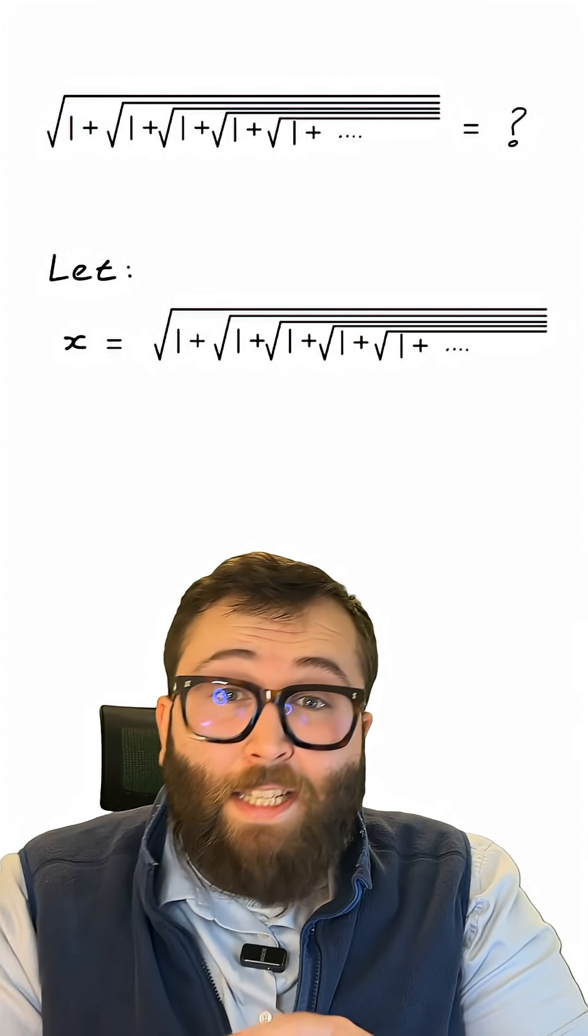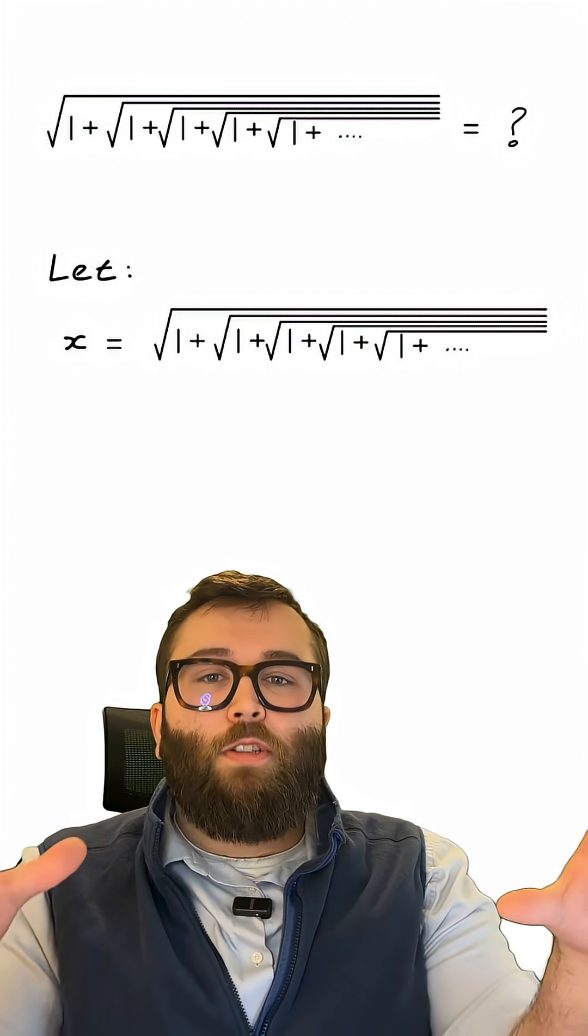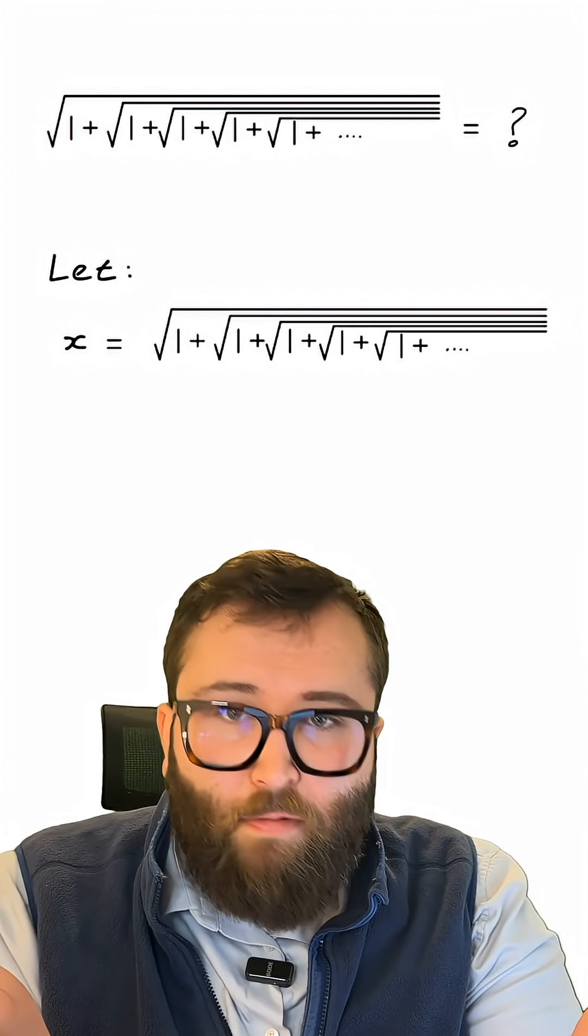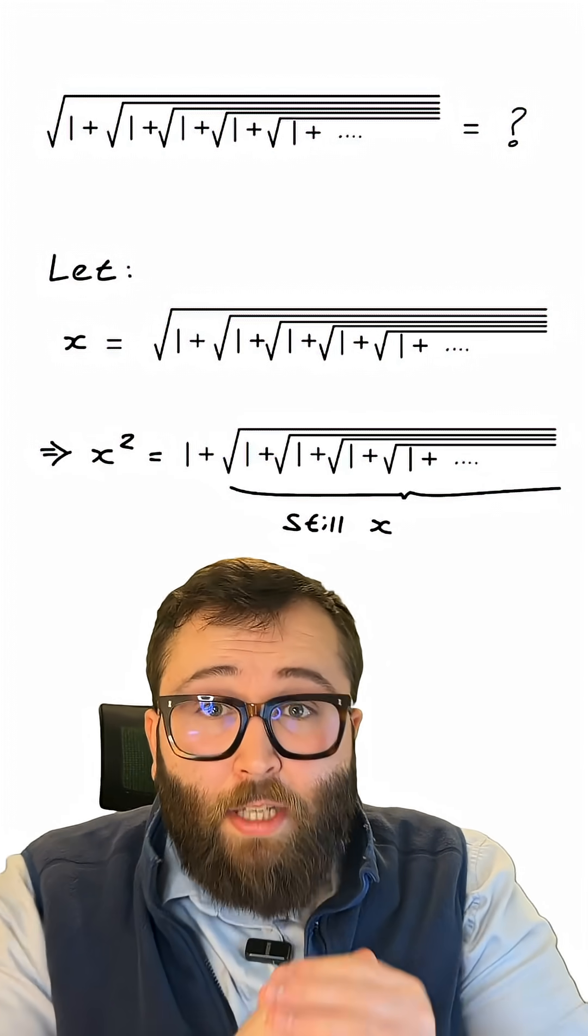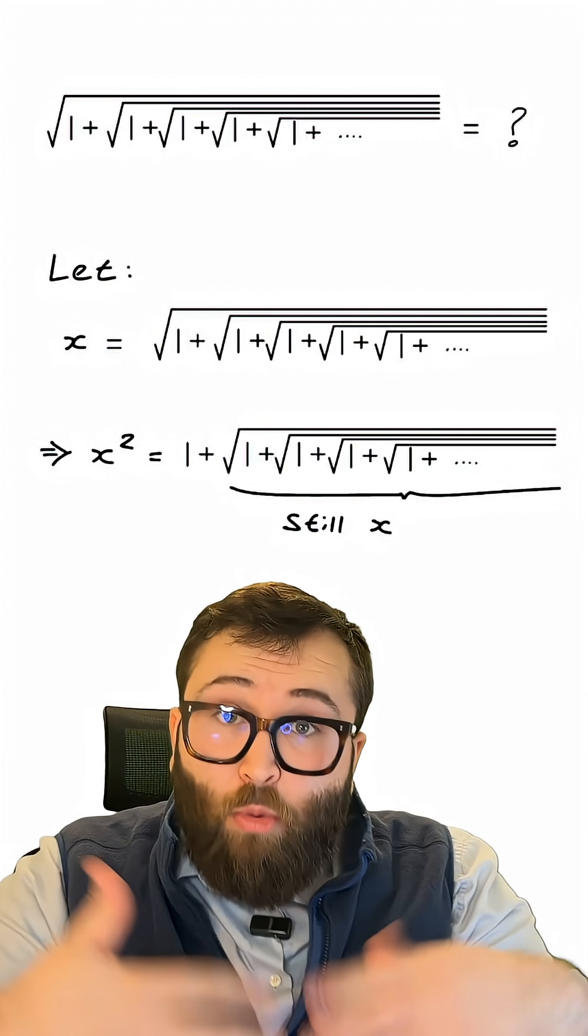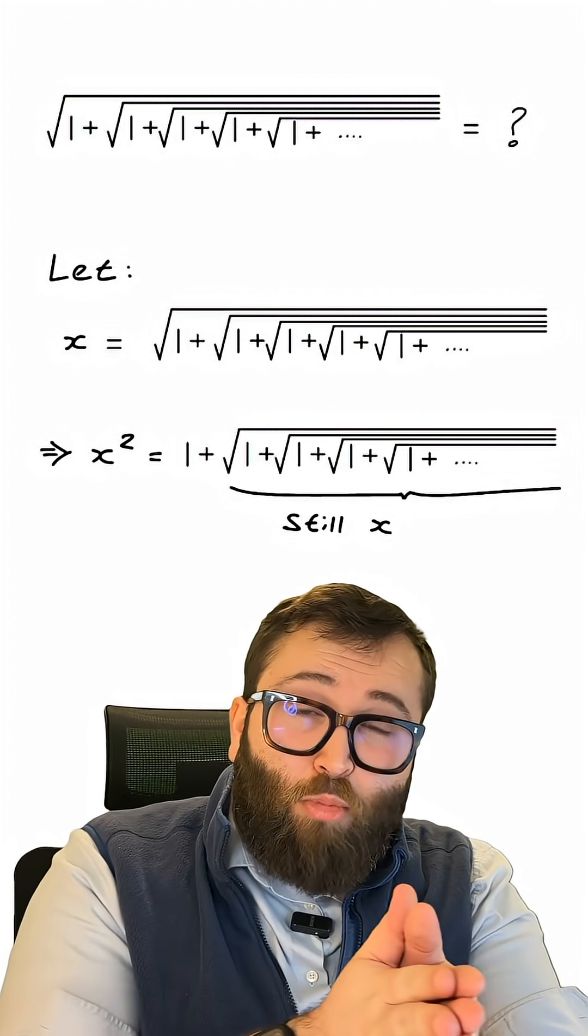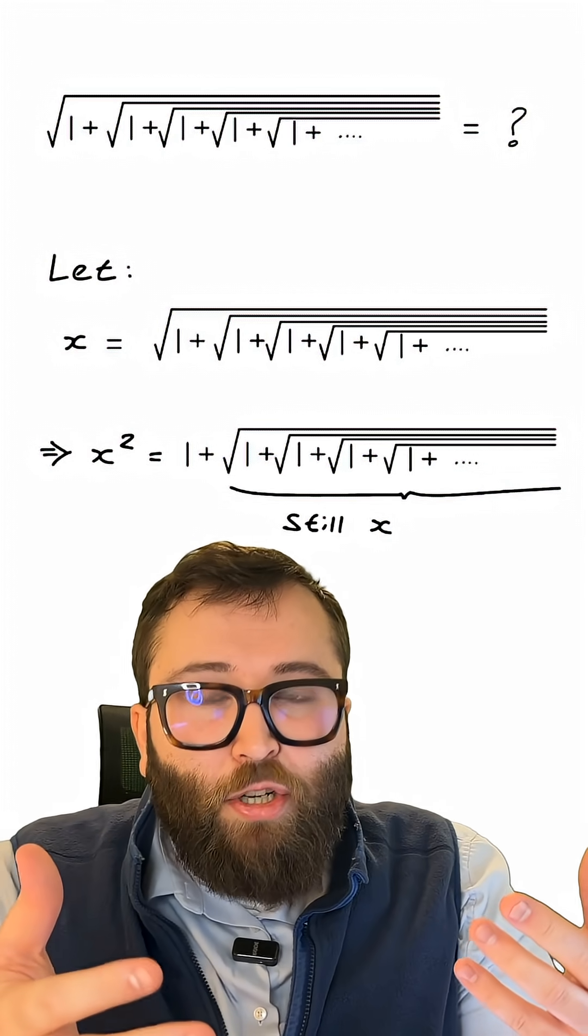So the first part of this trick is to let the thing we're trying to calculate the value of, this nested infinite square root, equal x, just some unknown variable. Now, because this pattern is infinite, if I remove one of these outermost square roots, i.e. by squaring the expression, the thing that's left over to the right of the plus one is actually still the same expression as before.